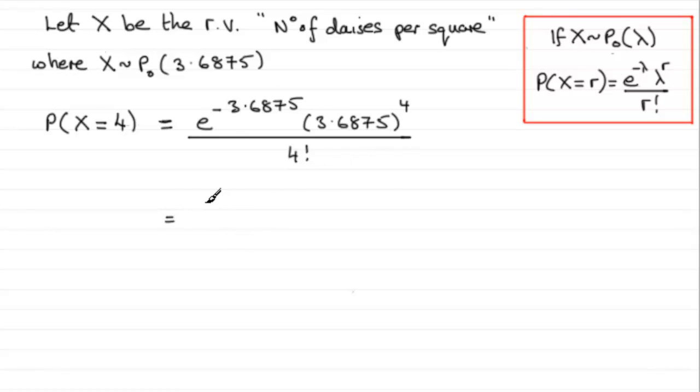So if you do that on your calculator, you should find you get 0.19286 and so on. And if we round this to three decimal places, it's going to be 0.193. We'll put that to three decimal places.